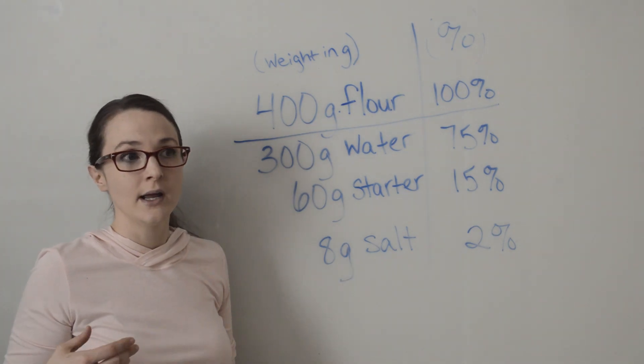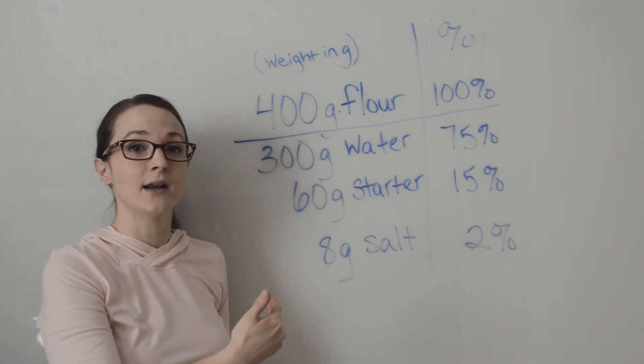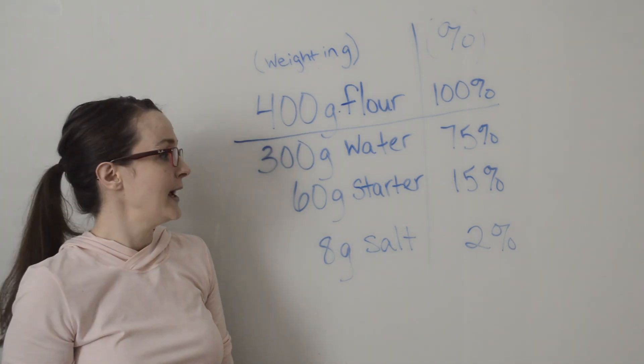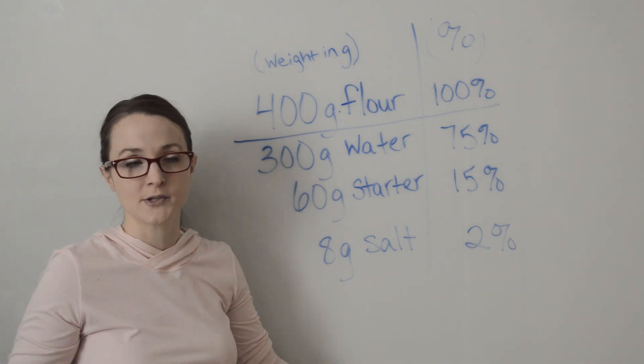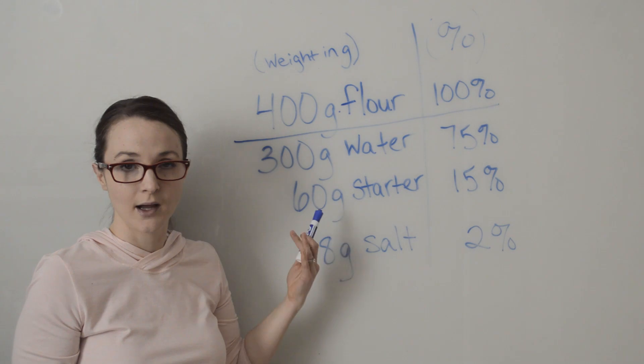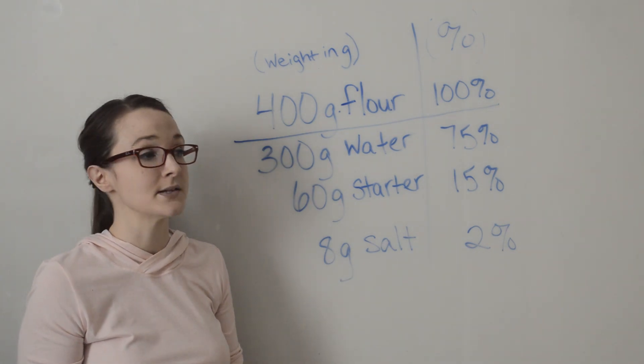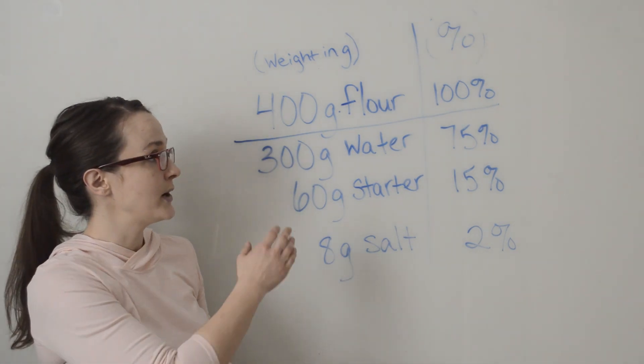And if it needed to be 20% starter, then I know that 20% of 1000 is 200. And I normally always keep my salt around 2%, so then that 2% of 1000 would be 20 grams of salt.